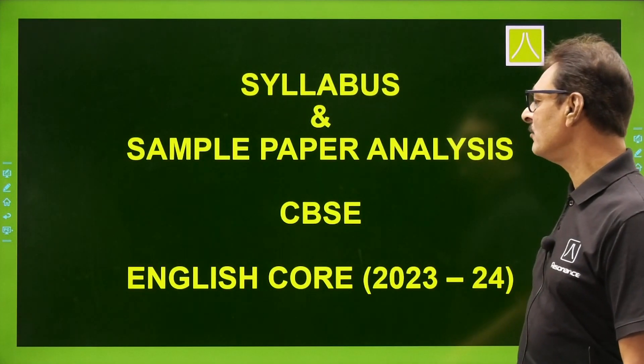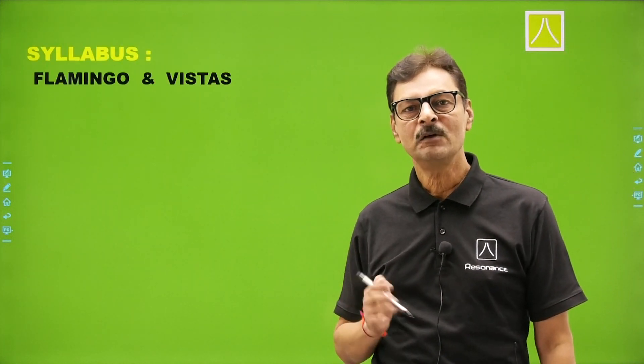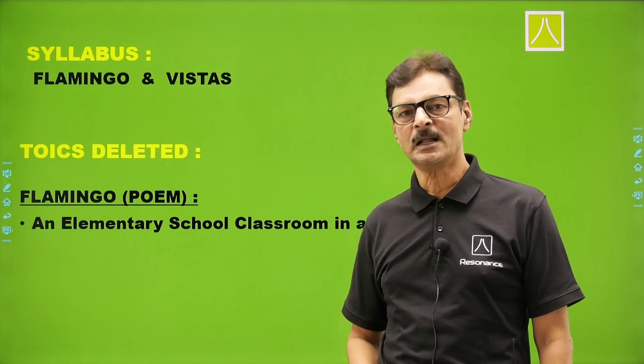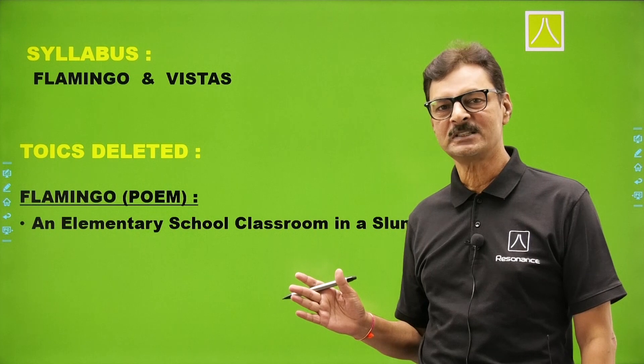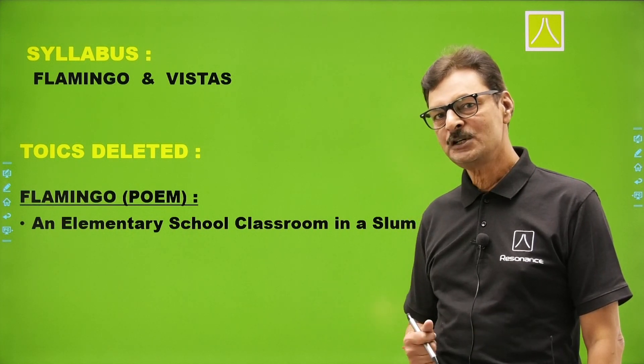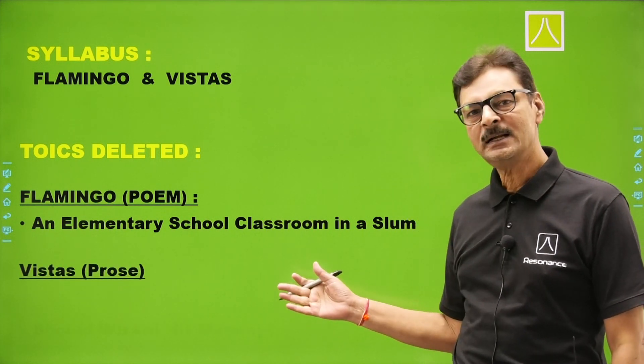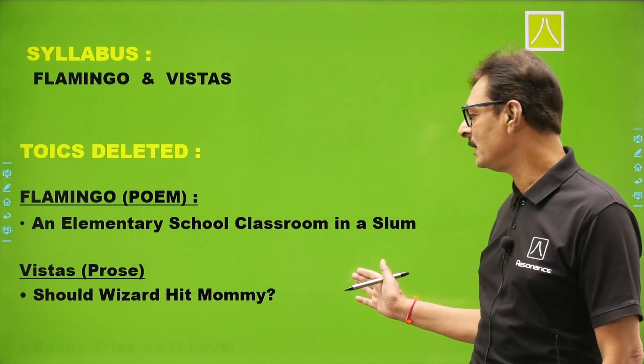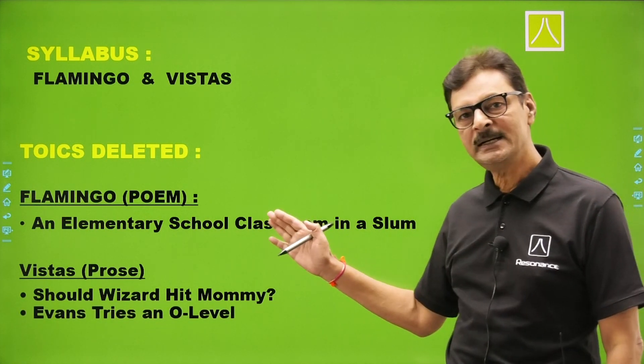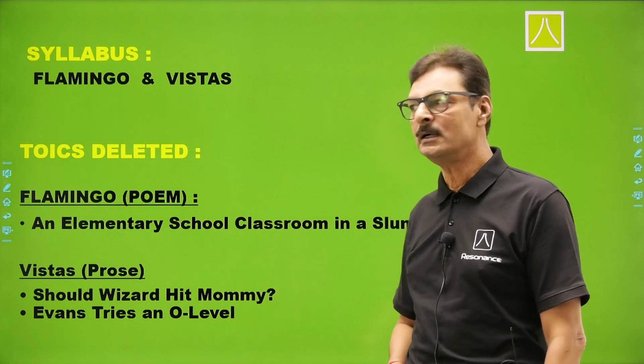Let's look at the syllabus first — kaonse topics aapke deleted hai from the two textbooks Flamingo and Vistas. The syllabus is same as announced earlier. The poem deleted from Flamingo is poem number 2, 'Elementary School Classroom in a Slum.' Two topics are deleted from Vistas: 'Should Wizard Hit Mommy' and 'Evans Tries an O-Level.' These two topics are deleted, same as announced earlier.